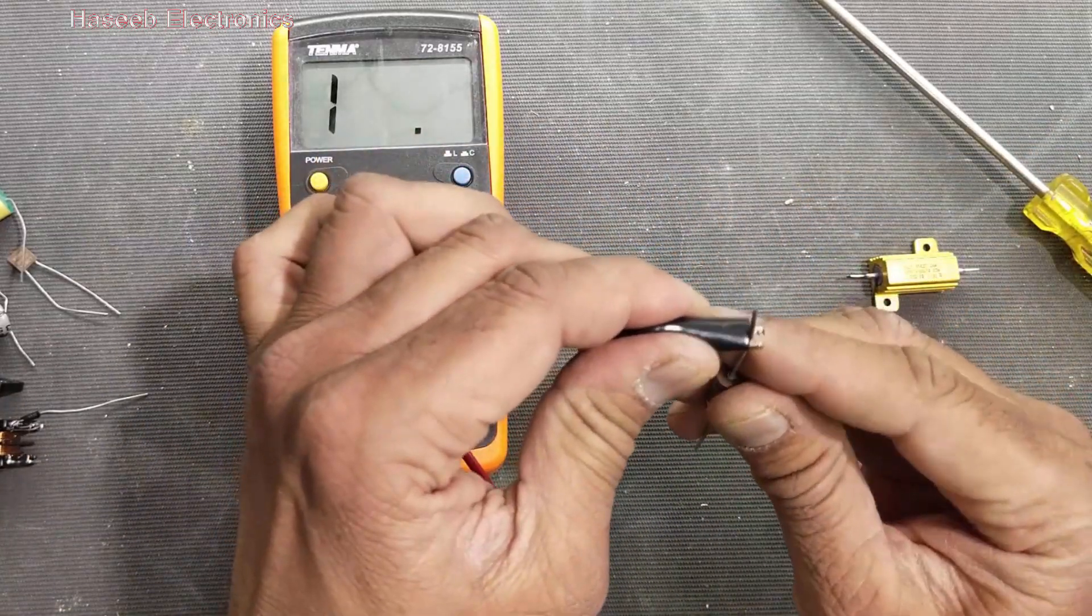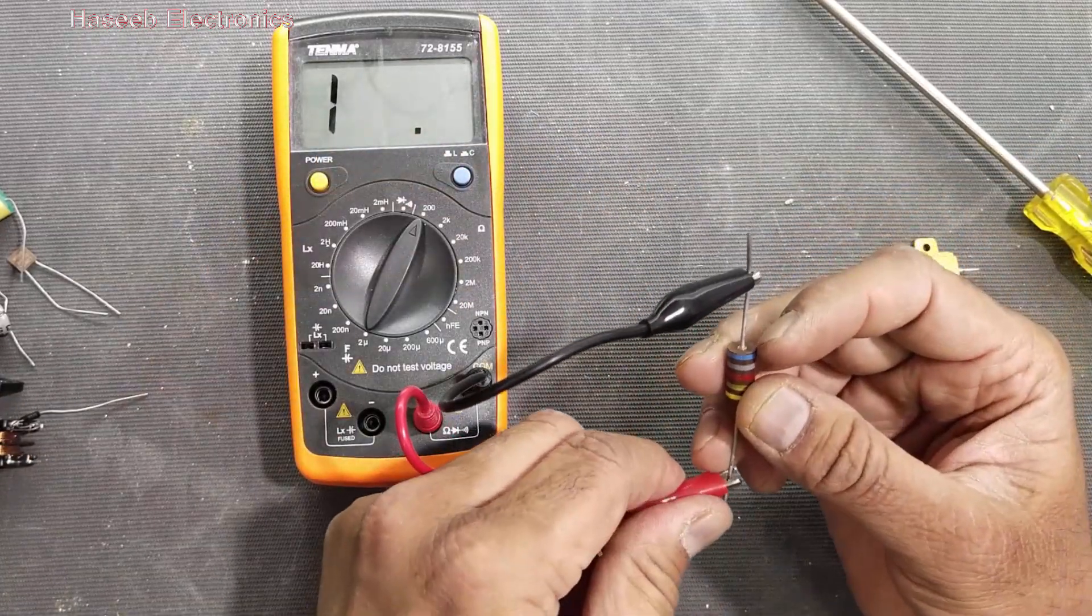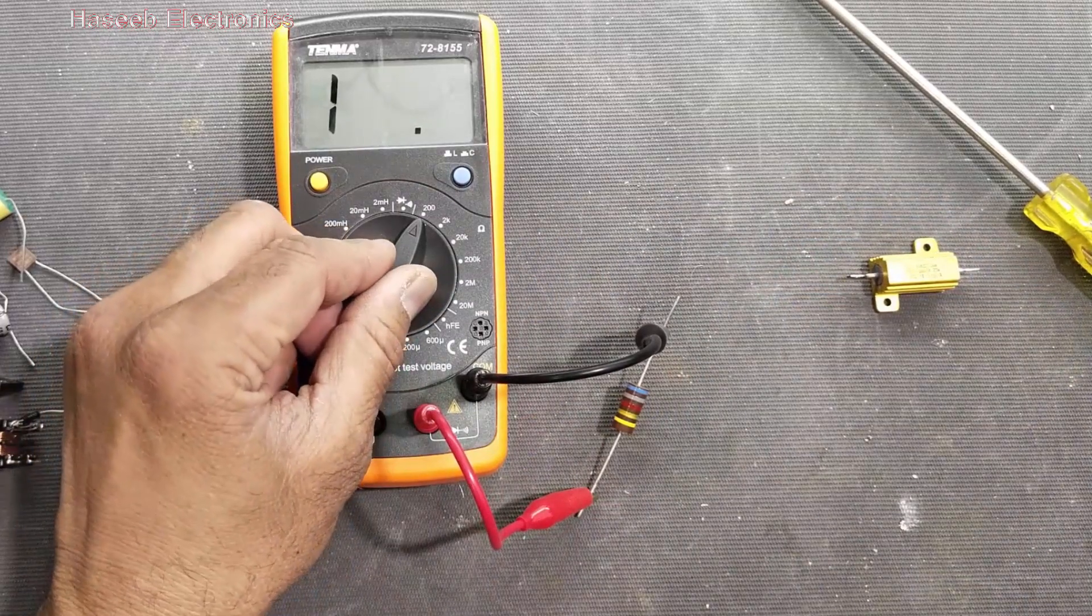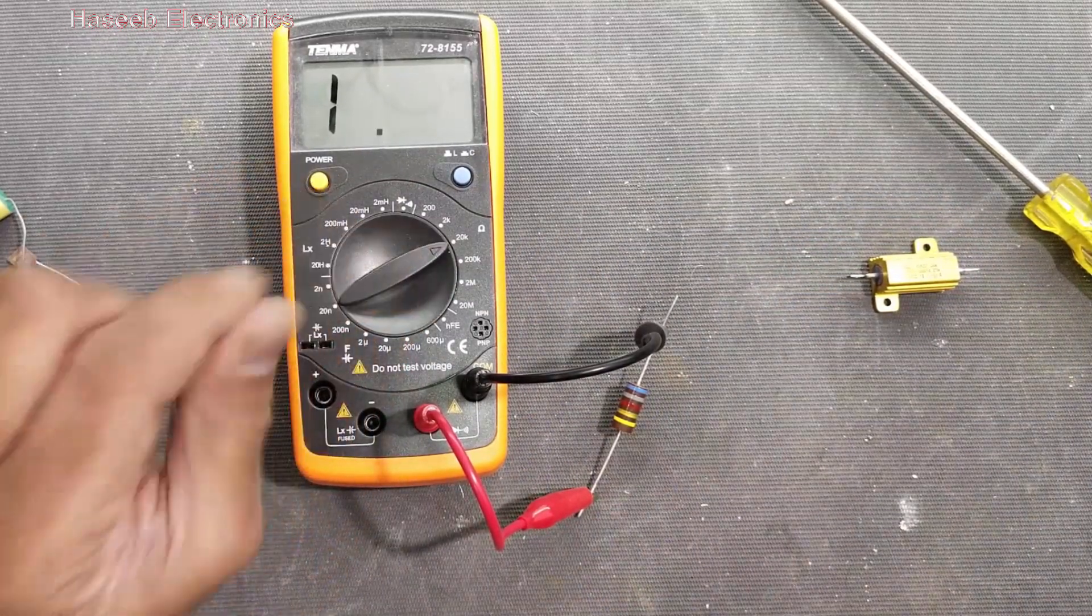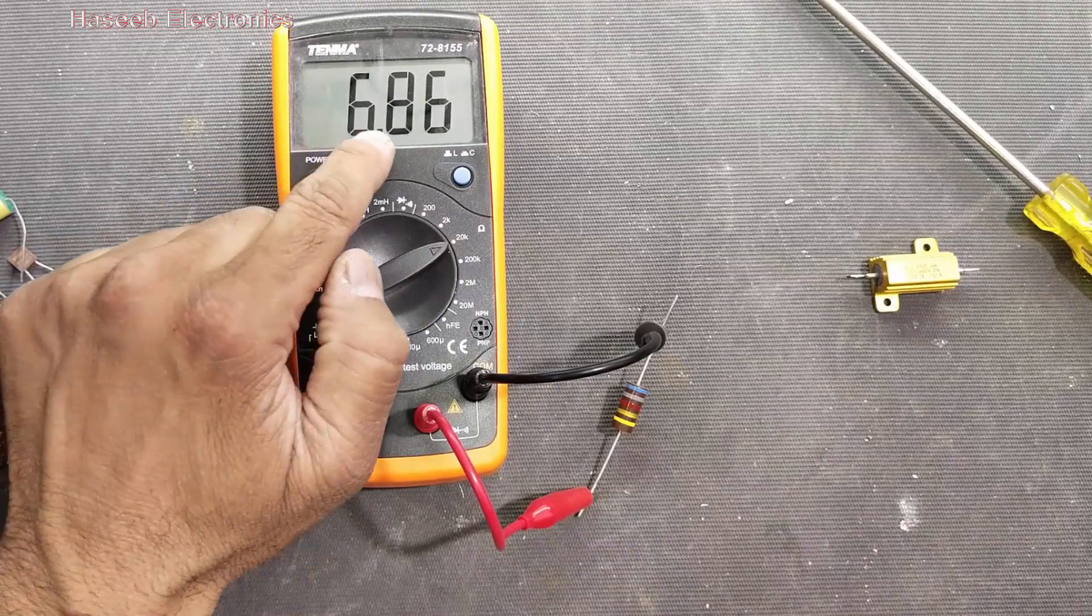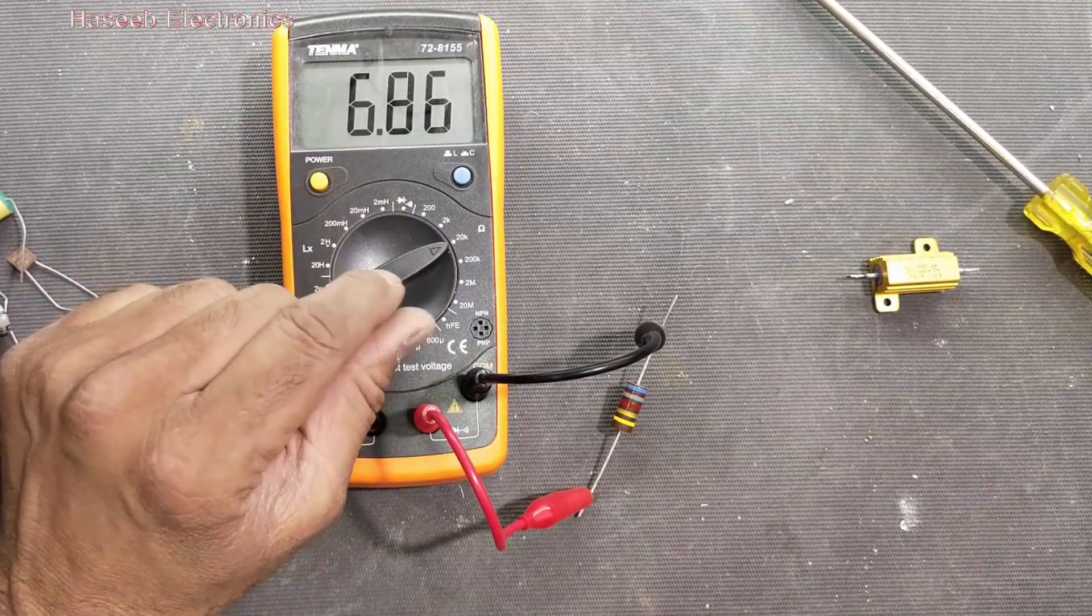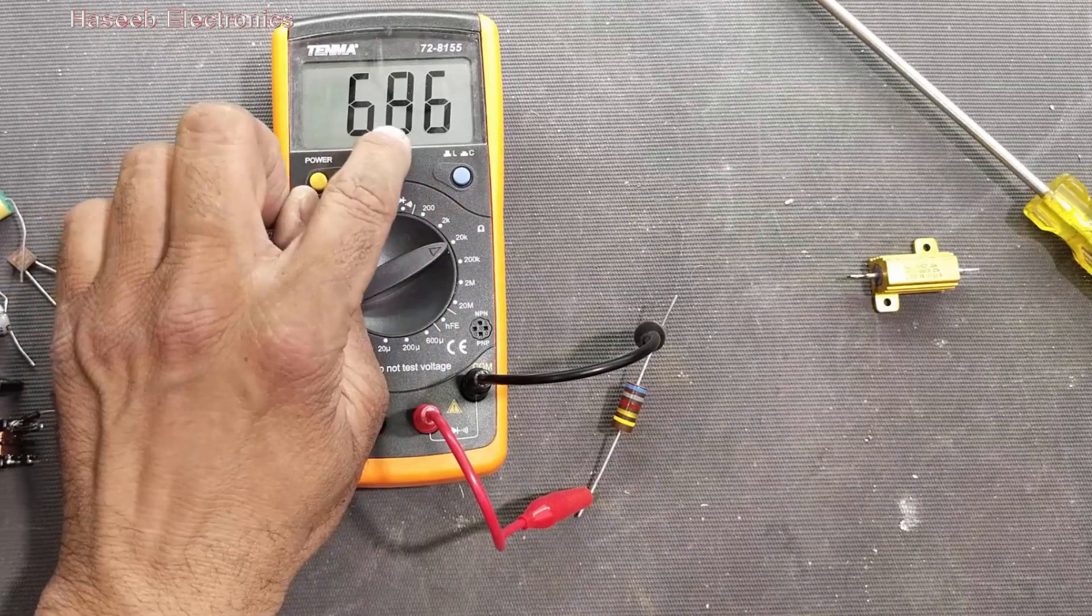Because it is manual range multimeter. Here it is not reading any resistance, 2k. Then increase the range. It is 6.8, it is 6.9. So within tolerance it is 6.86.